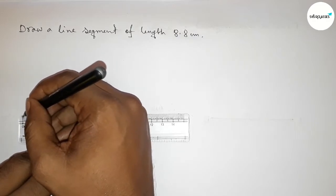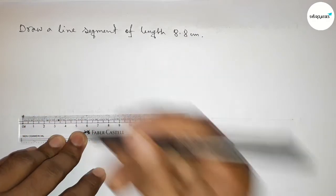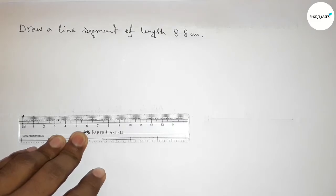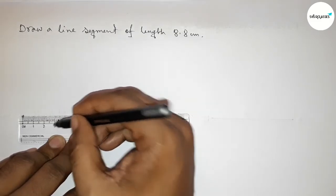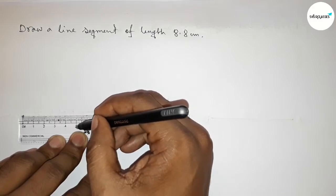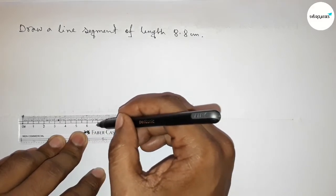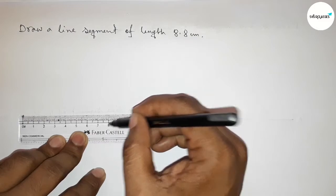First marking the zero, okay, then counting. So this is 0, 1, 2, 3, 4, 5, 6, 7, 8.